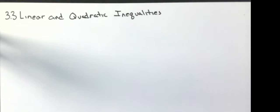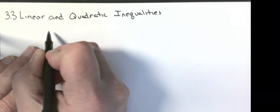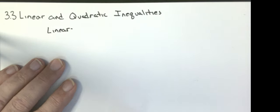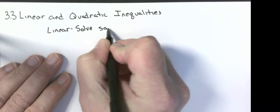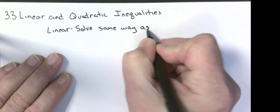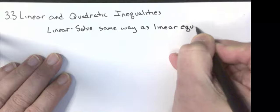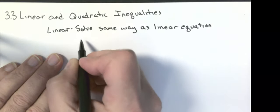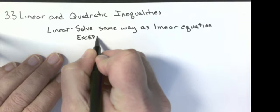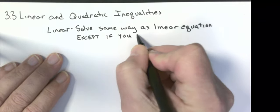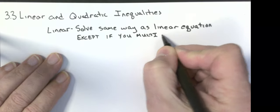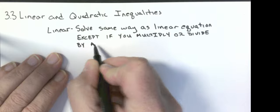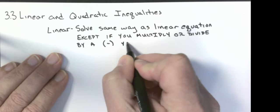Our next section, we're going to look at linear and quadratic inequalities. First, I want to talk about linear. You solve a linear inequality the exact same way you solve linear equations — basically doing inverse operations, subtracting the same thing from both sides, multiplying or dividing both sides by the same thing, except if you multiply or divide by a negative, you reverse the inequality symbol.